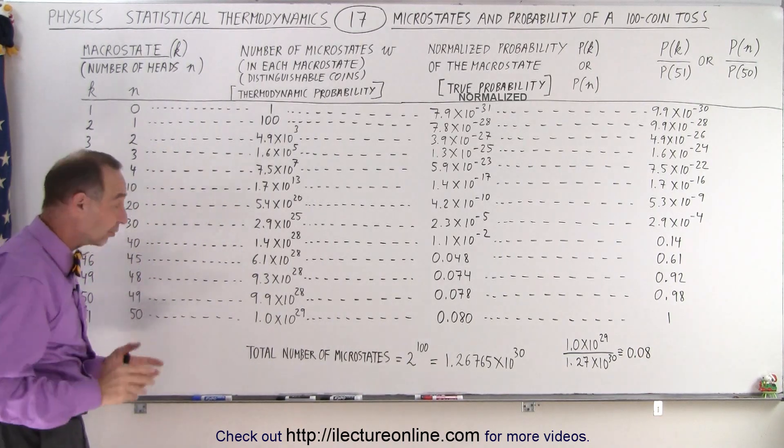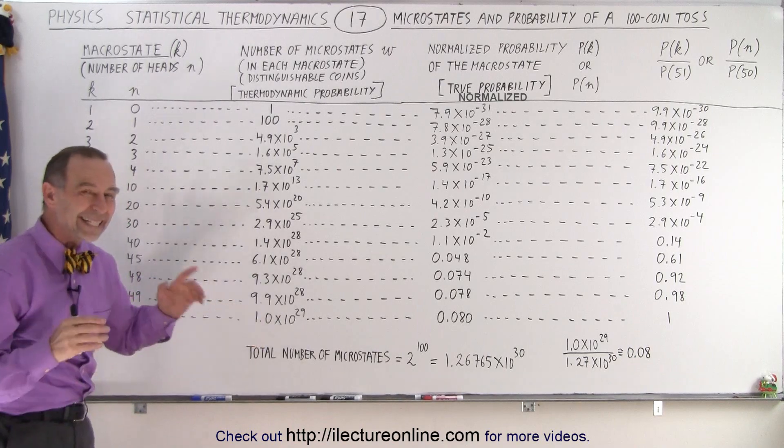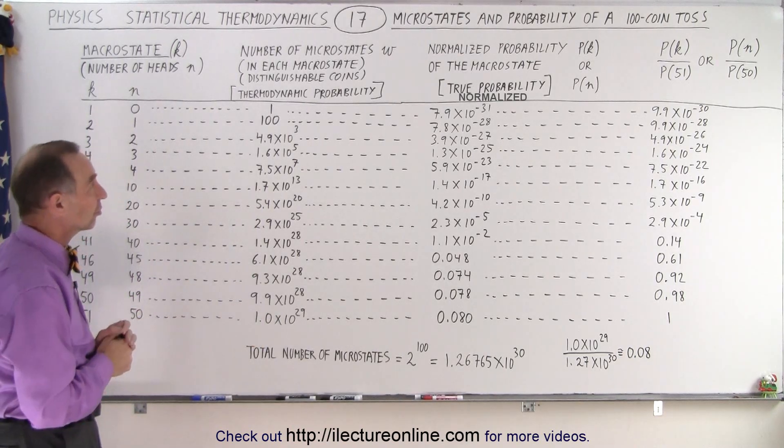we can go all the way up to 1 times 10 to the 29 different combinations in which this can happen.